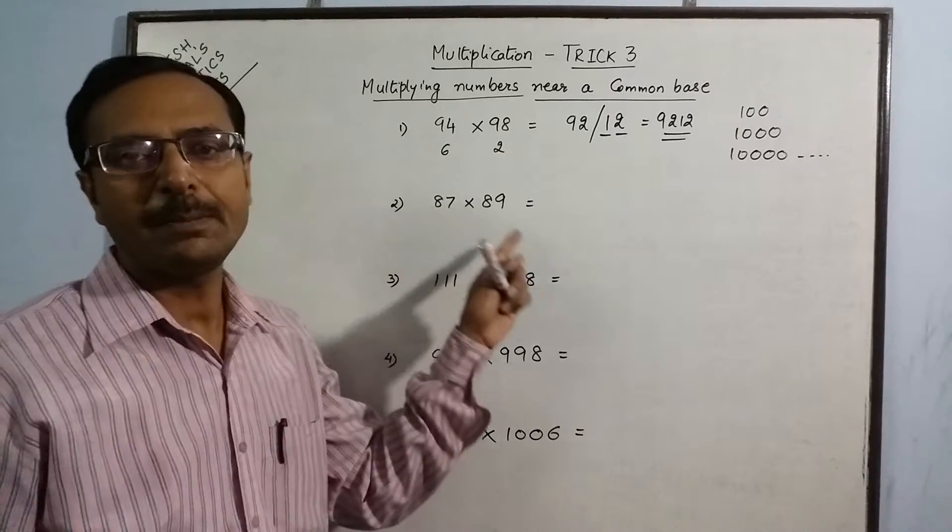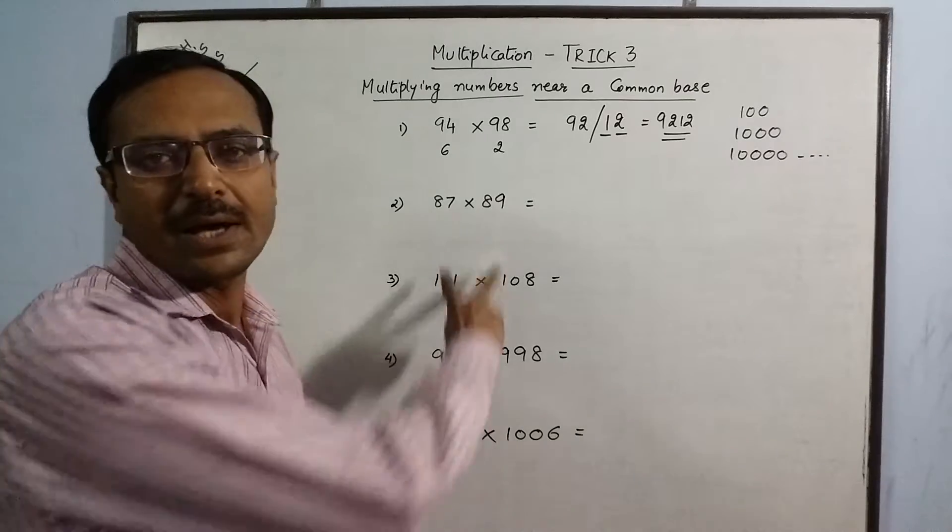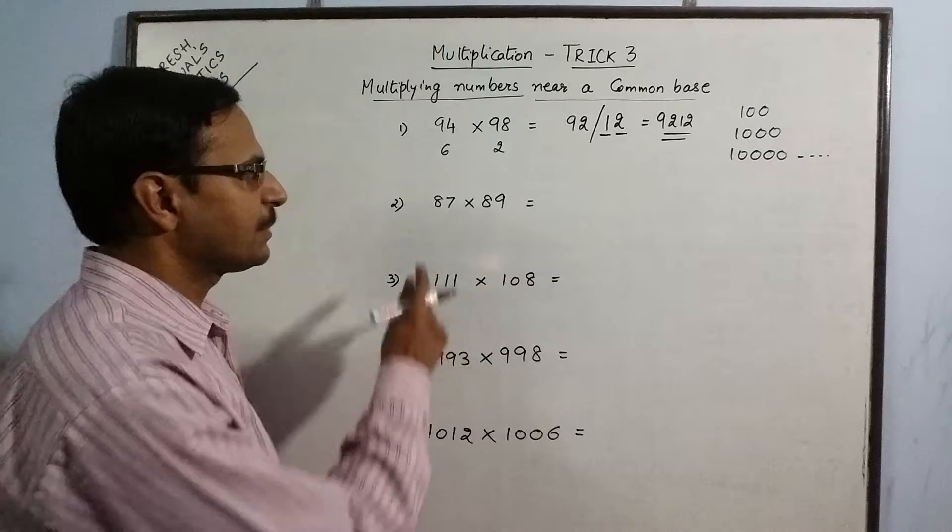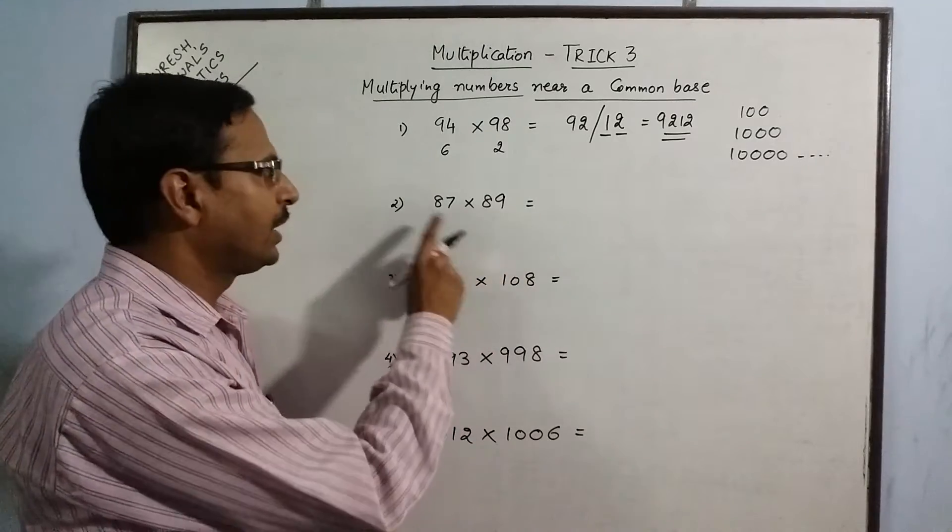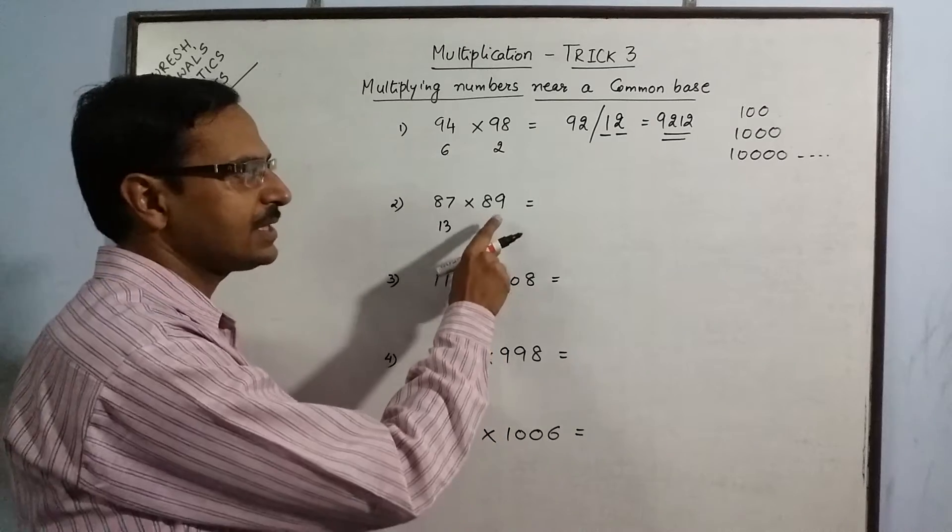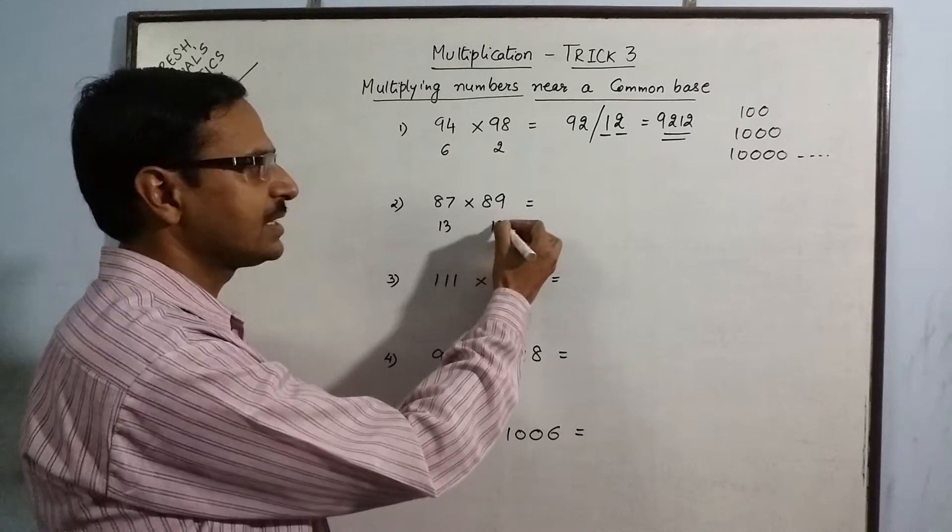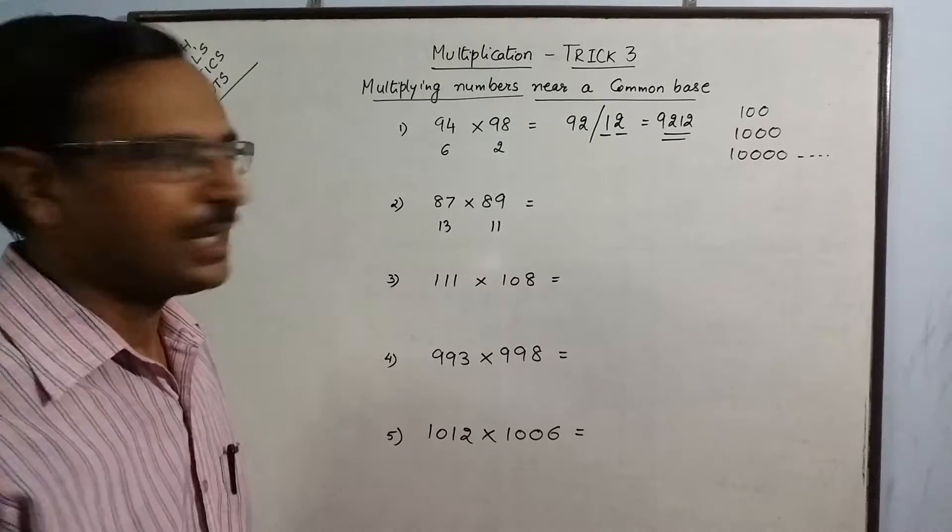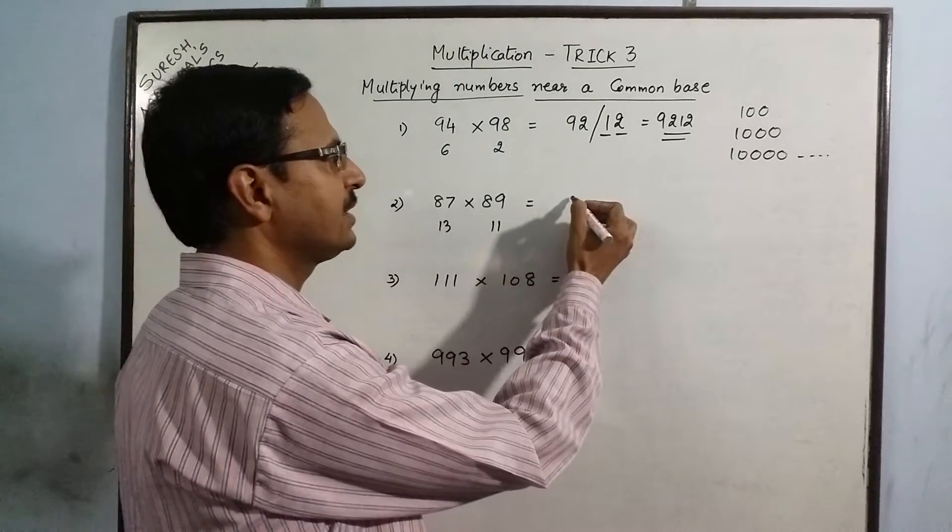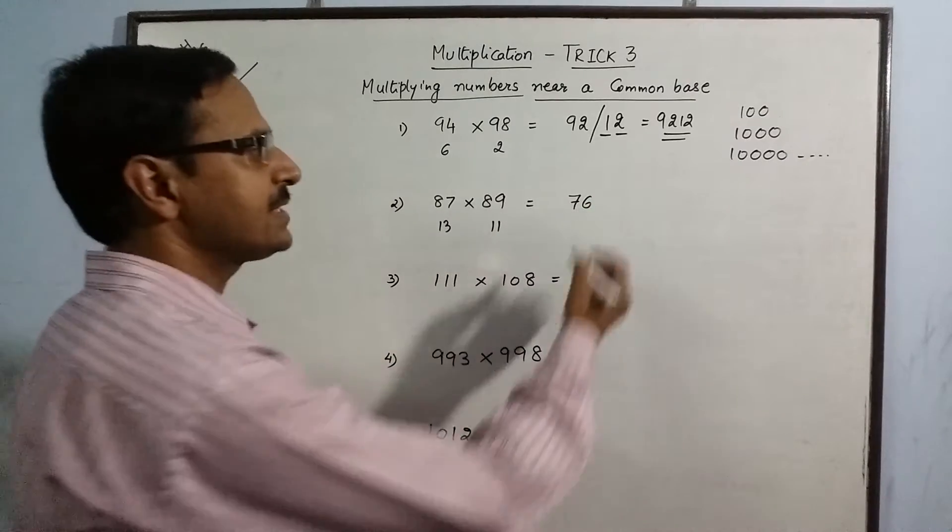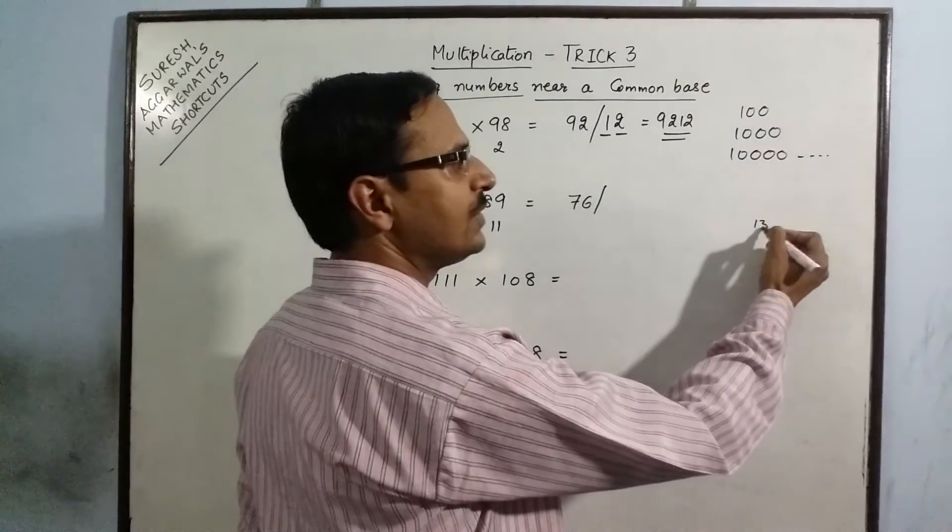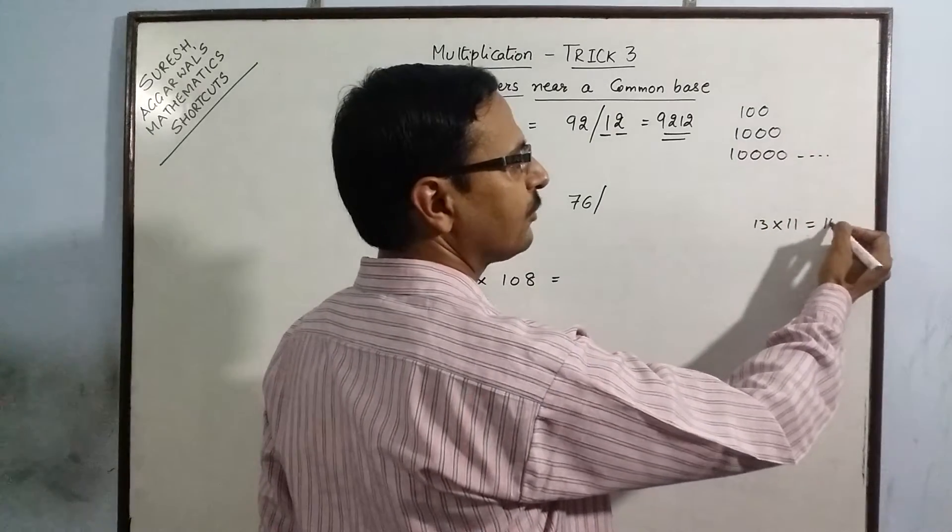87 multiplied by 89. Again, these two numbers are having a common base 100. Again, we subtract these numbers from 100. 100 minus 87 gives us 13. 100 minus 89 gives us 11. 87 minus 11, this is the first part, 76. And the second part, 13 into 11, which gives us 143.